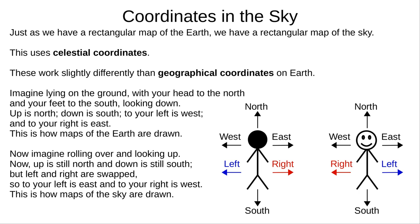First, imagine lying down so that you're looking at the Earth, with your head to the north and your feet to the south. Up is north, down is south, left is west, and right is east — this is how maps of the Earth are drawn. Now roll over so that you're looking at the sky. Up is still north and down is still south, but your left and right have been swapped, with left being east and right being west. This is how maps of the sky are drawn.